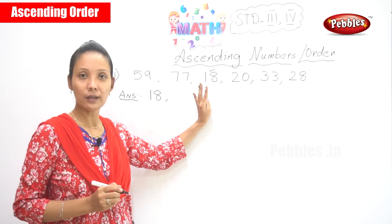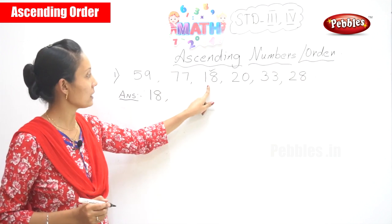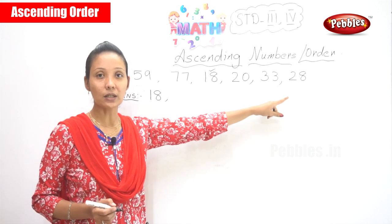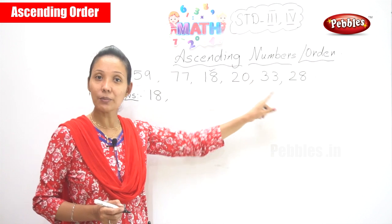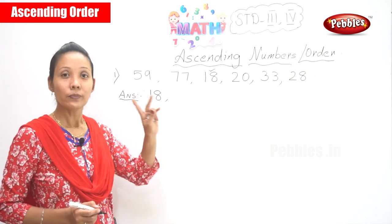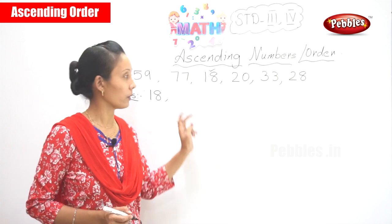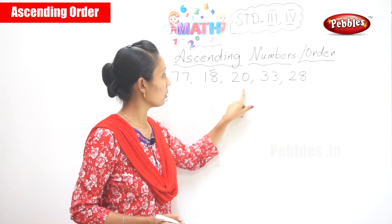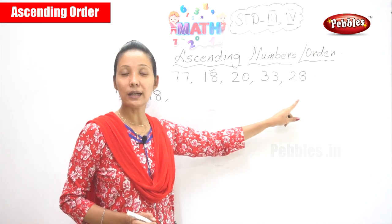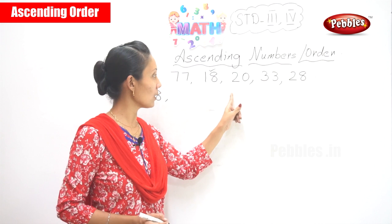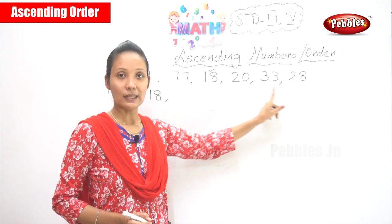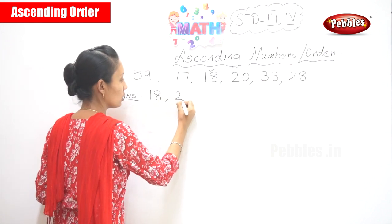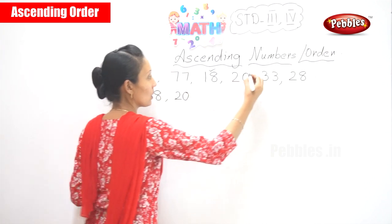So you know you have already finished with that number. 18 is over. So after 18, now what is the next number starting with 2? You need to check if any number starts with 2 — run through the numbers. 20 is the smaller number, so after 18 you will write 20. Take 20, that's over.